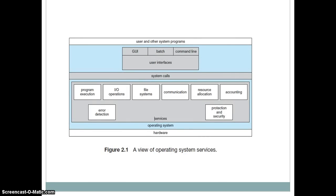As we move toward the next concepts of operating systems, we need to know what actually constitutes operating system services and their structure. Let us consider the diagram. You can see that there are multiple abstraction layers. The first abstraction layer is user interfaces — we'll talk about those in a couple of minutes. For now, what we need to emphasize is the structure of the diagram, which shows user interfaces such as GUI (graphical user interface), batch, command line, and many others.